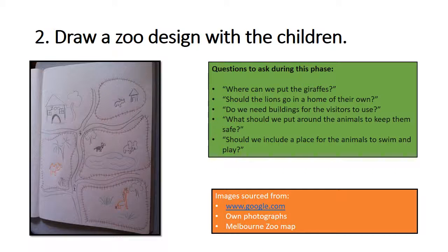The next part of the design phase requires you to draw with the children an example of your zoo design. Questions you could consider when co-constructing learning could be: where can we put the giraffes? Should the lions go in a home of their own? Do we need buildings for the visitors to use? What should we put around the animals to keep them safe? Or should we include a place for animals to spend and play?